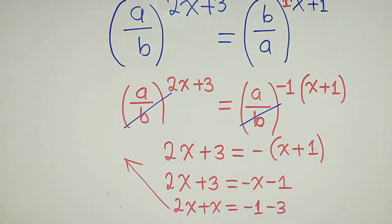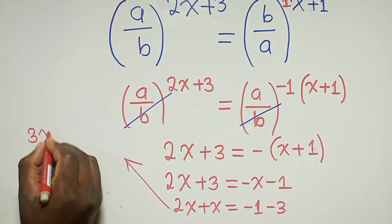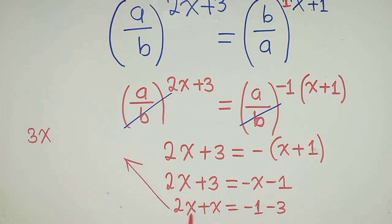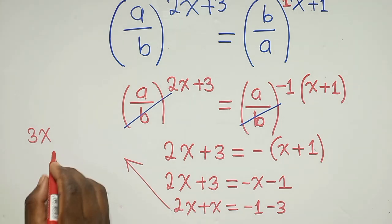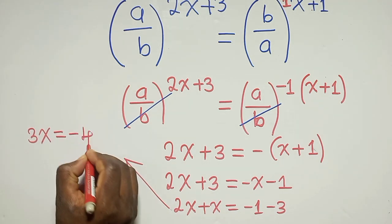We are of course going to have 2x plus x is equal to minus 1 minus 3. So now from this stage, we shall say 3x, this one, 2x plus x, that is 3x, is equal to negative 4.